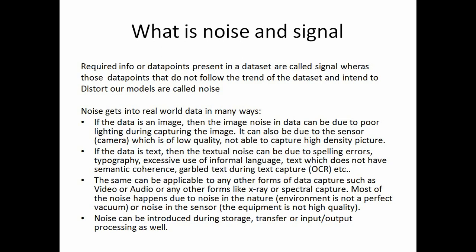There are various reasons for a real-world data set to have noise. If the data set is images, noise can be due to poor lighting or poor camera quality. If the data is text, it can be due to spelling errors or use of very informal language. Noise can also be introduced during storage, transfer, or input-output processing. I'll provide this PPT so you can go through all these points.